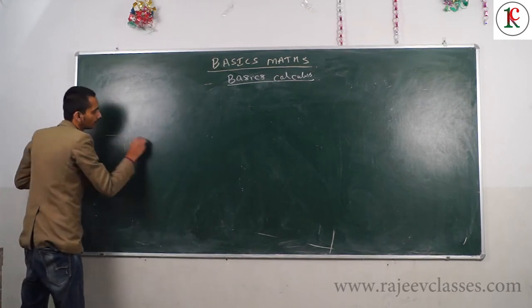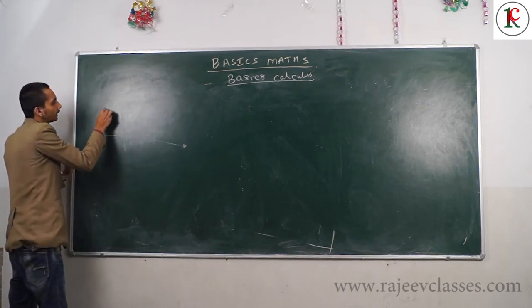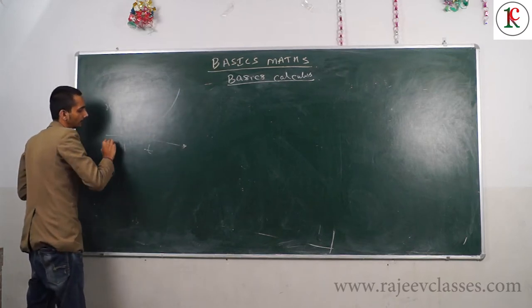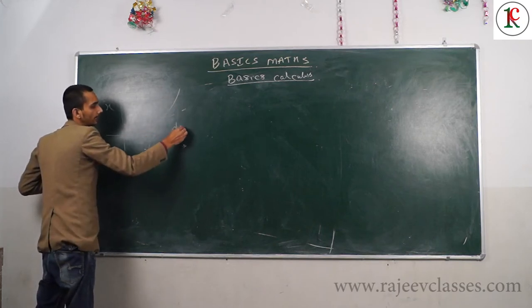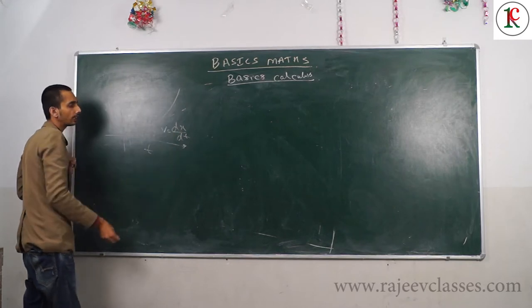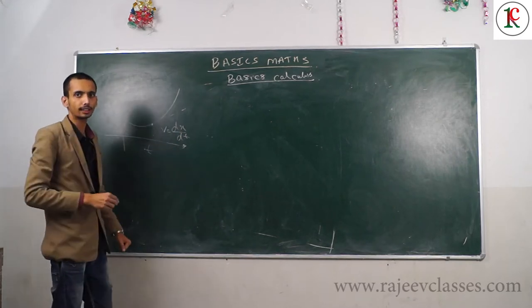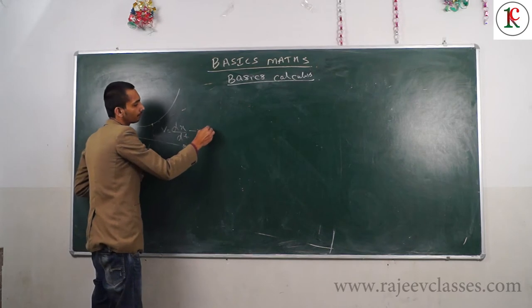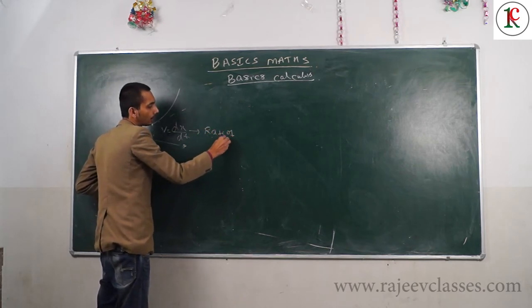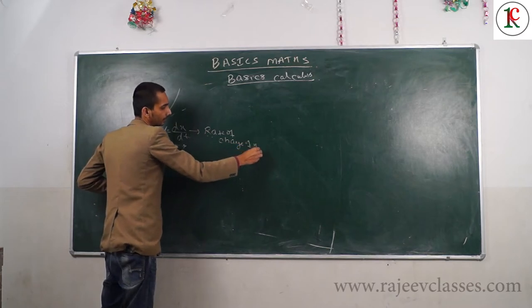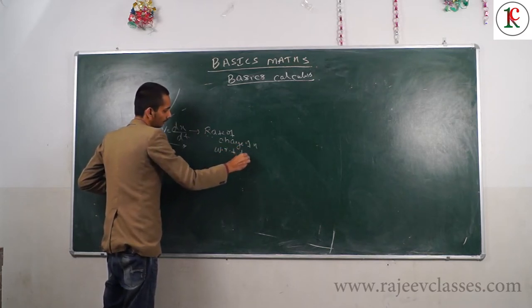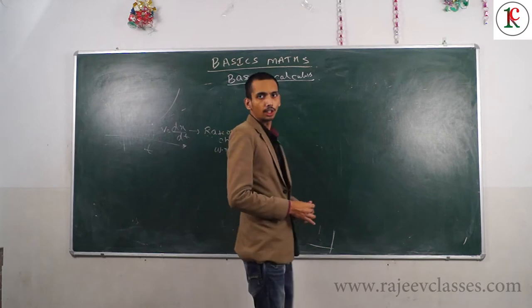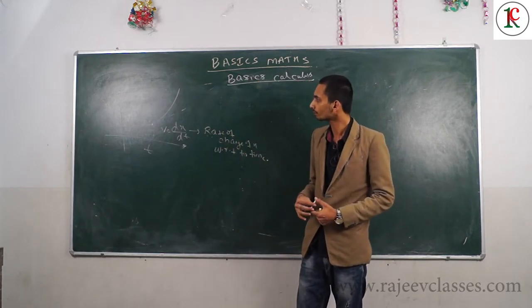Let me explain using a graph of X versus time. Suppose at some point you want to calculate velocity - you take DX by DT. At any point on the curve, when you differentiate, you get the slope, which is the rate of change of X with respect to time.